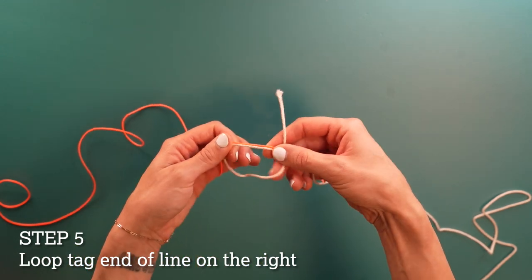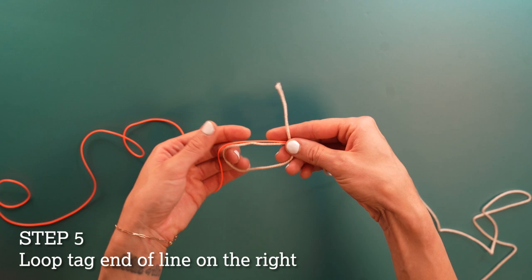Now take the tag end from the line on the right and double it back to form a loop. It'll look something like this.